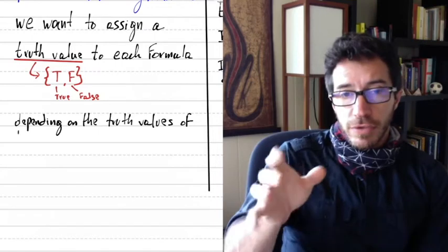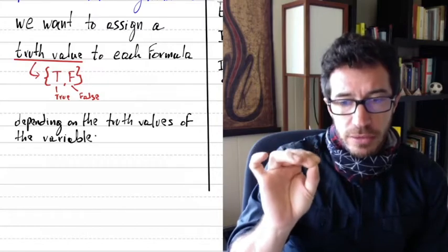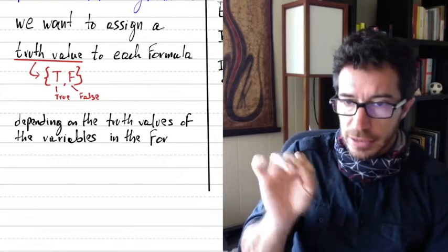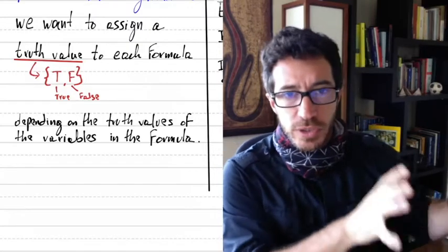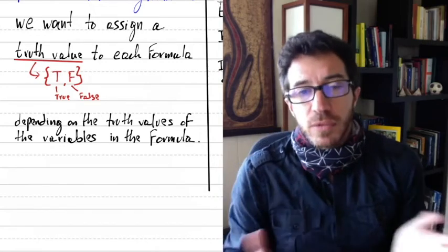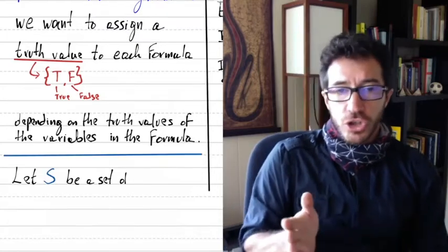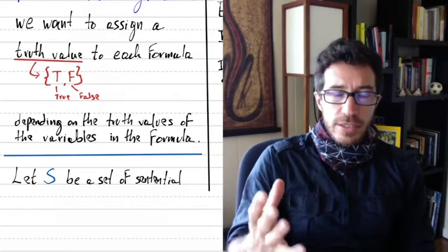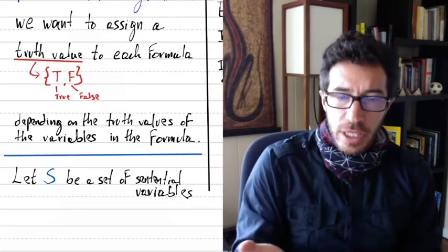We're going to define a way such that depending on the truth values of the variables in a well-formed formula, we assign a truth value to the well-formed formula. Remember, a well-formed formula is one built using the rules from the last video — the ones that make sense and that you can write. So let S be a set of variable symbols — for instance, S could be the symbols a1, a2, ... up to a_k.